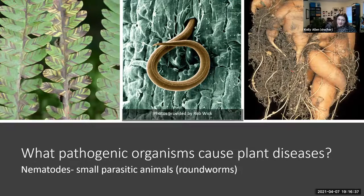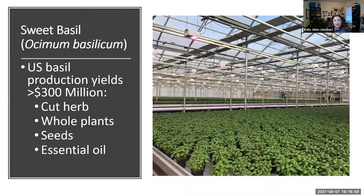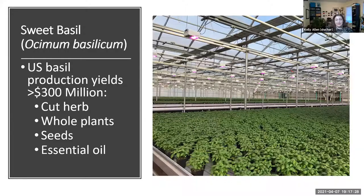I study sweet basil. Everyone likes sweet basil — it's generally considered to be the most important culinary herb worldwide. In the US, estimates of our yields for basil production are over $300 million annually. It's sold as a cut herb, as whole plants you can find in supermarkets or garden centers, and basil seed production is a huge factor. It's even harvested for essential oils and frozen foods and beyond. There's so much use of basil and it's a very significant plant that has impacted many cultures, especially Italian cuisine.